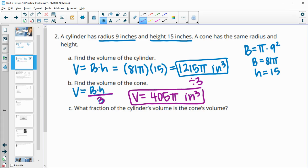So then what fraction of the cylinder's volume is the cone? The cone is one third of the cylinder's volume.